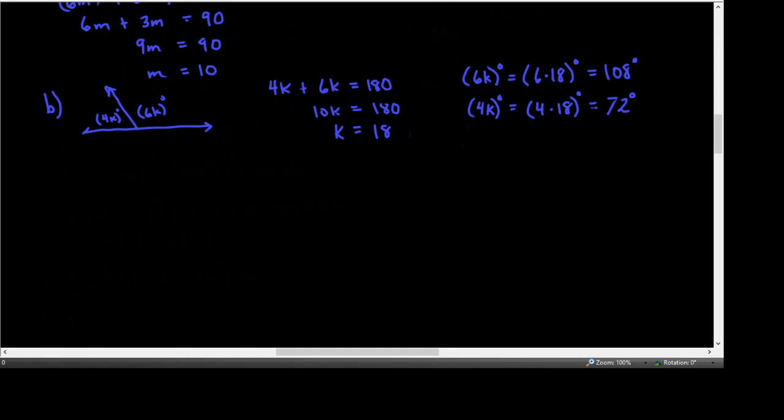The next topic is the subdivision of the degree into smaller parts. One degree is one 360th of a circle, which is pretty small, but when talking about things very far away — like the angle between two stars — a tiny change in angle can mean millions of miles difference. So we do subdivide angles measured in degrees into smaller units.